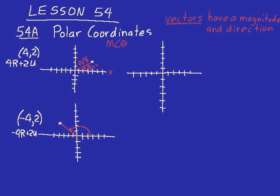Let's do one more example. If you had the point negative 4, negative 2, you would say minus 4R minus 2U — that's another way to write the rectangular coordinates. We go to the left 4 and down 2, putting our point right there. To find the polar coordinates, we draw a line from the origin to the point, and the angle is from the positive x-axis around to that magnitude line. So polar coordinates are a way of writing a vector — a magnitude, which is the distance from the point to the origin, and a direction, which is the angle relative to the positive x-axis.